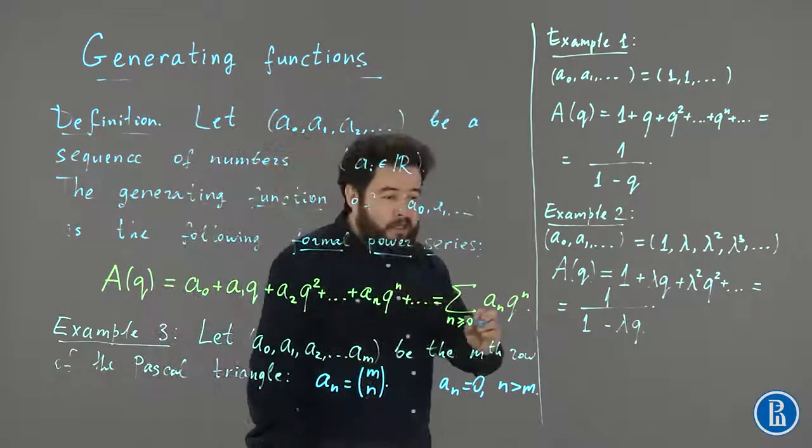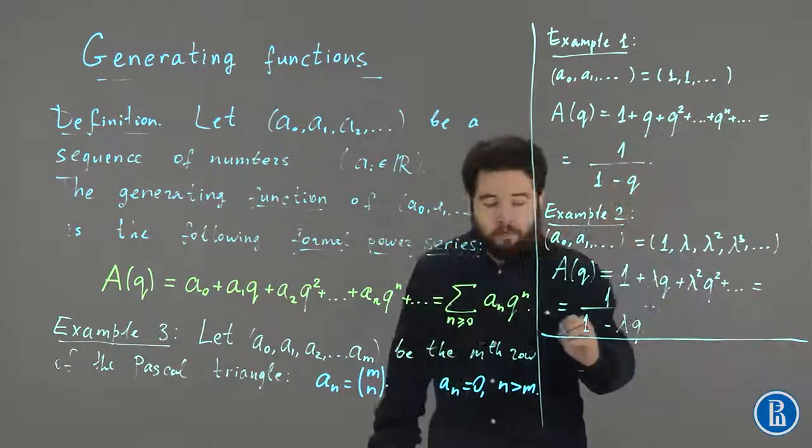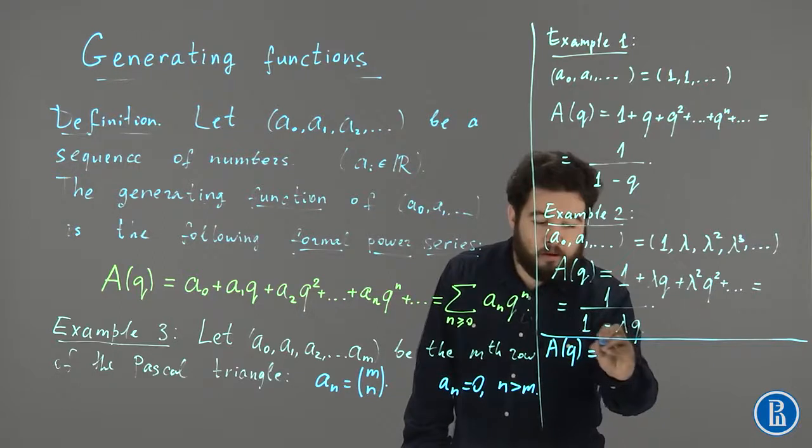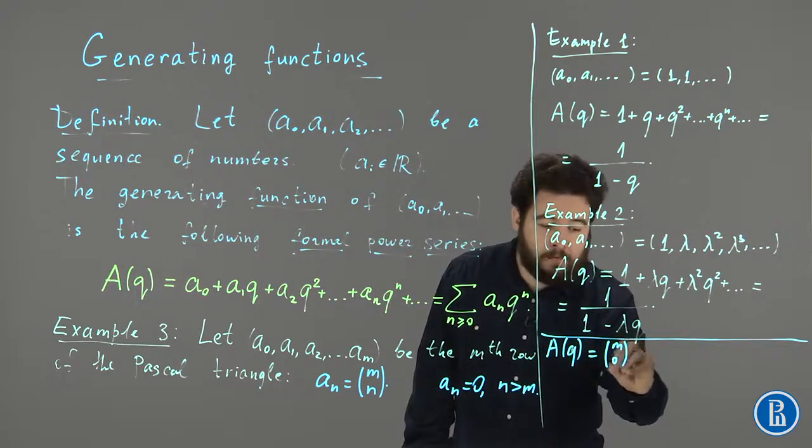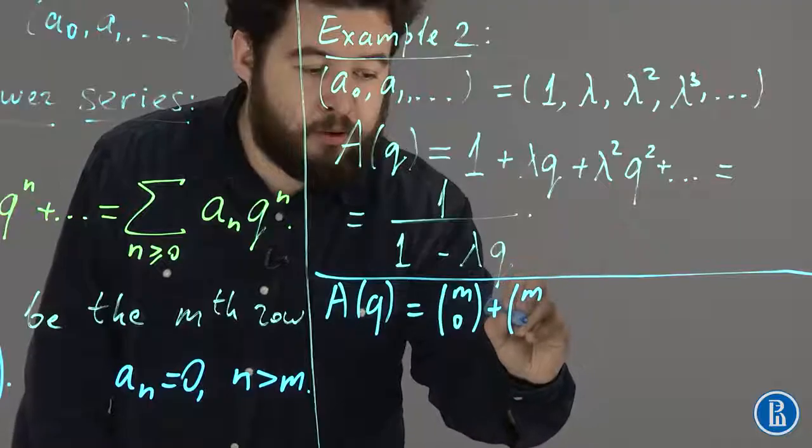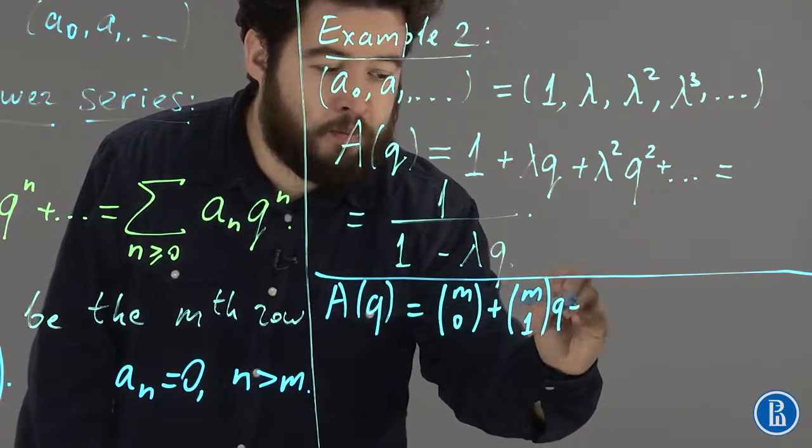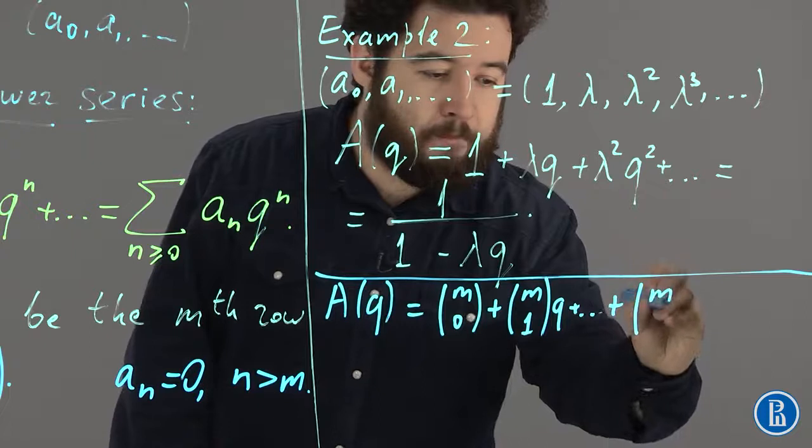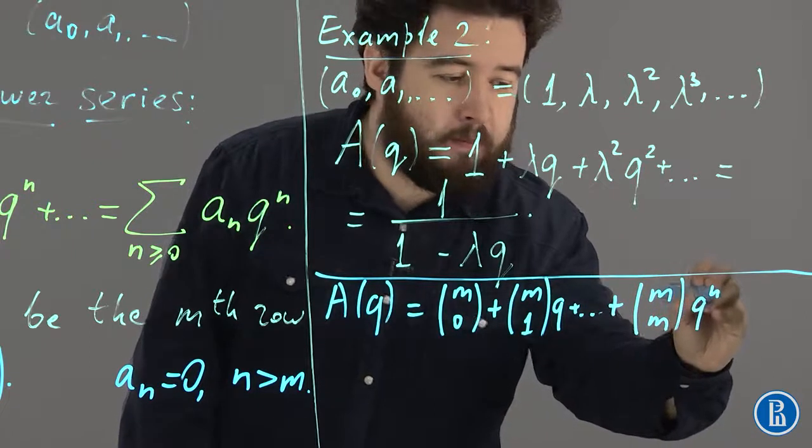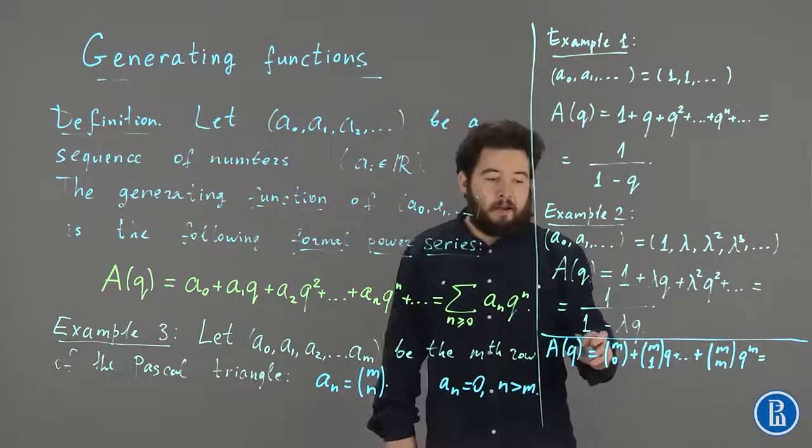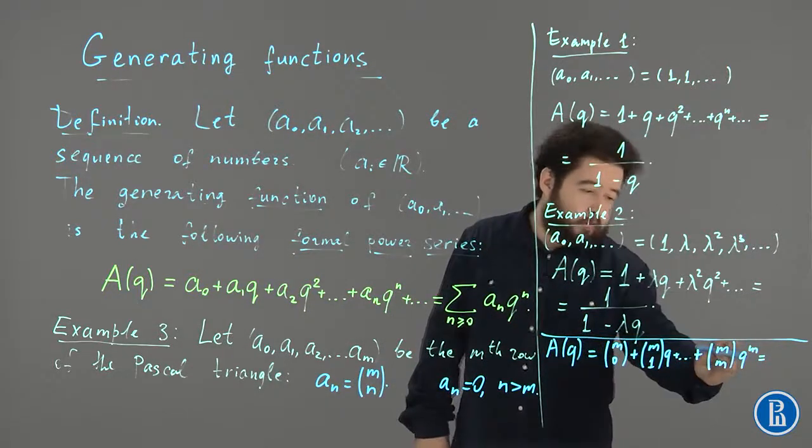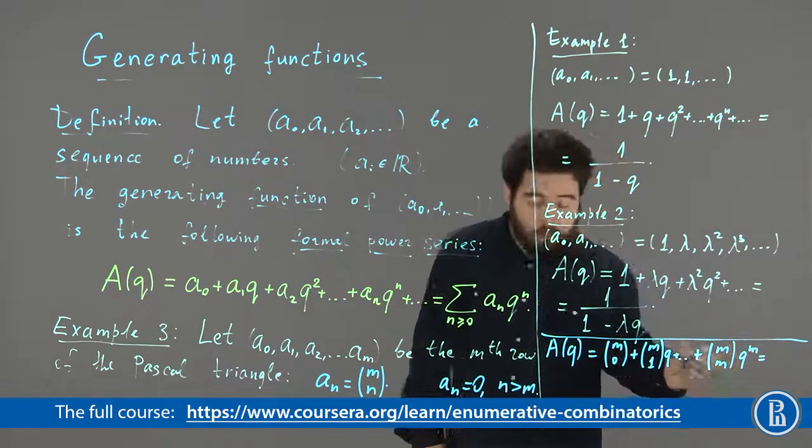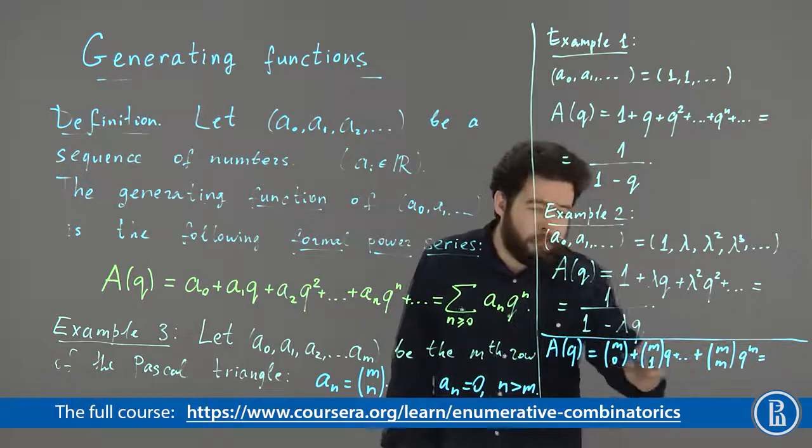Okay, and in this case, the generating function will be as follows. A of q for this sequence is m choose 0 plus m choose 1 times q plus etc plus m choose m times q to the power m. And note that this will be a polynomial. There will be no terms with the powers of q greater than m. So, there will be just m plus 1 terms in this expression.